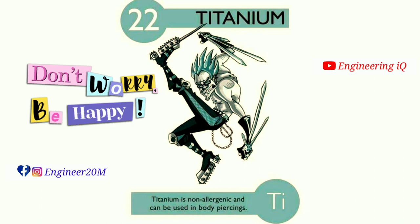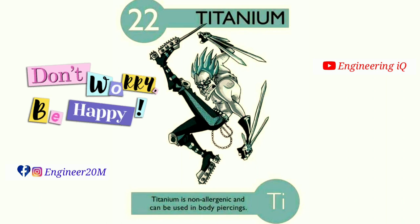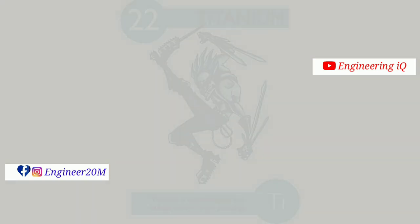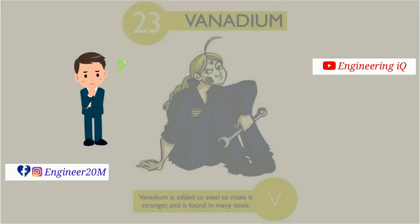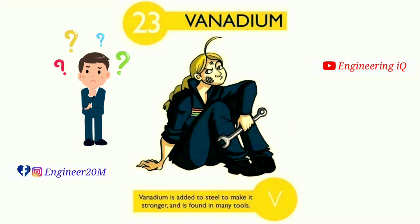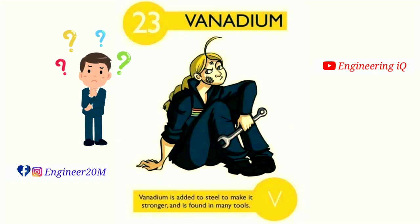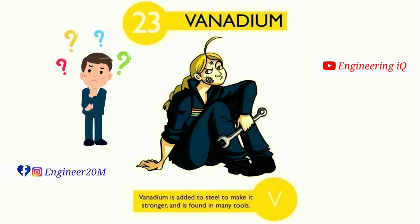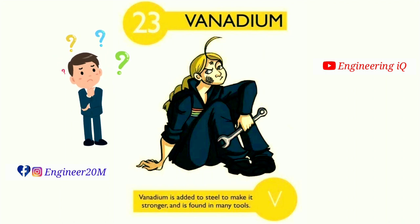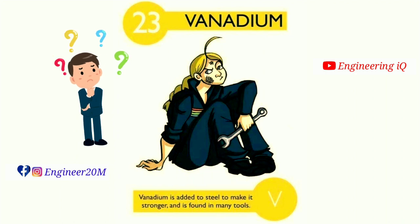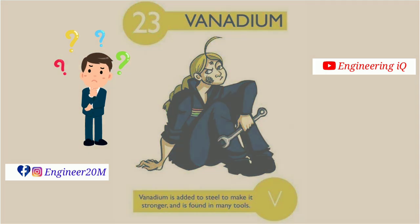Vanadium: atomic number of vanadium is 23. Vanadium is added to steel to make it stronger and is found in many tools. It is denoted by V.